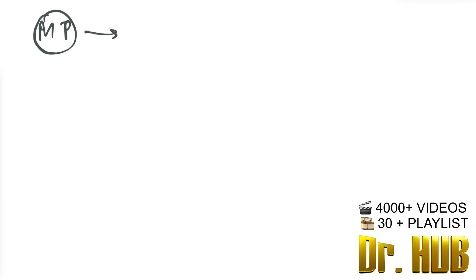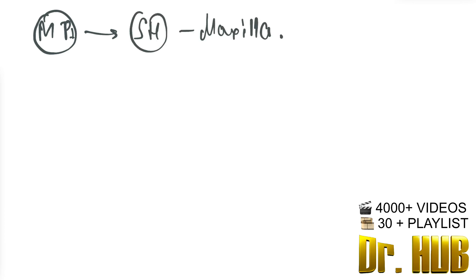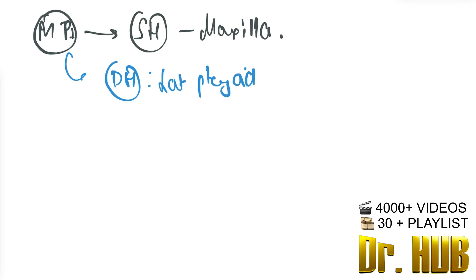Moving on to the medial pterygoid. The superficial head originates from the maxilla. The deep head originates from the lateral pterygoid plate and also the palatine bone. These are the origins of the medial pterygoid.